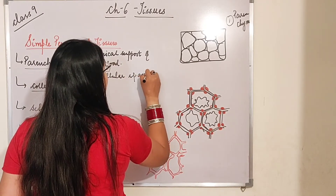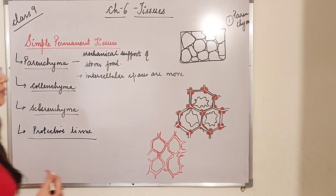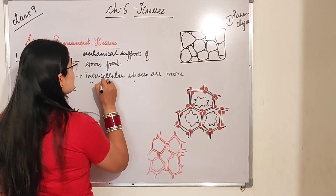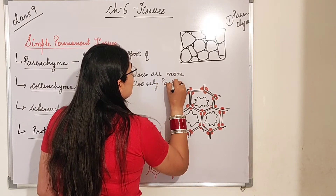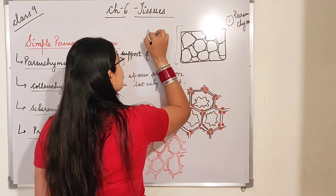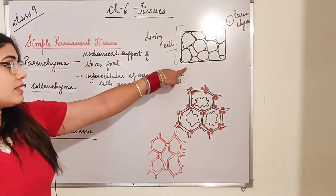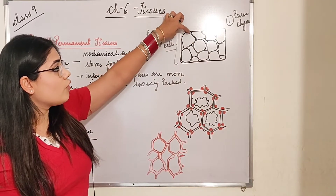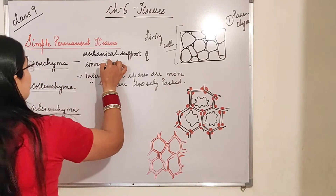The intercellular spaces are more, as you can see in diagram number one. Therefore the cells are loosely packed. It consists of living cells — the cells present inside are living cells and they are very loosely packed, so obviously the intercellular spaces are more in quantity. They provide mechanical support and store food.